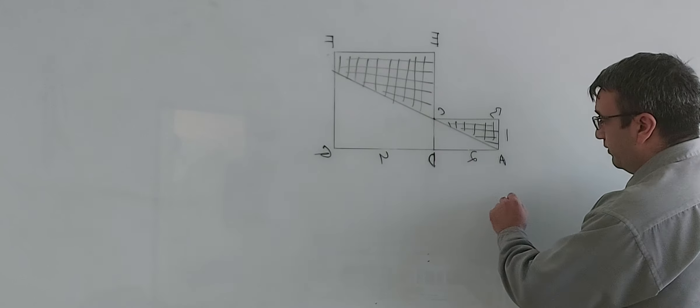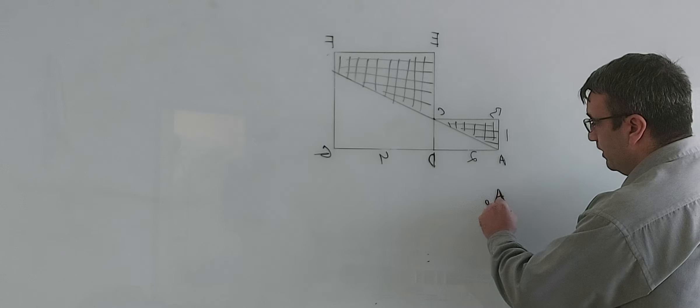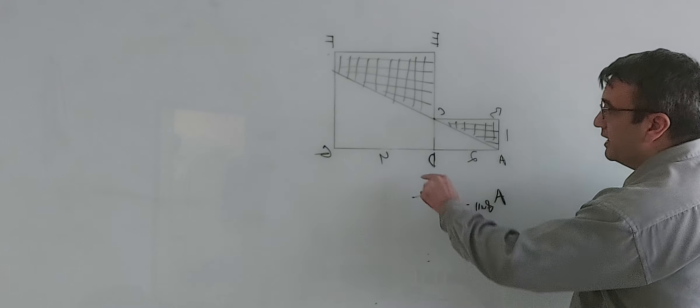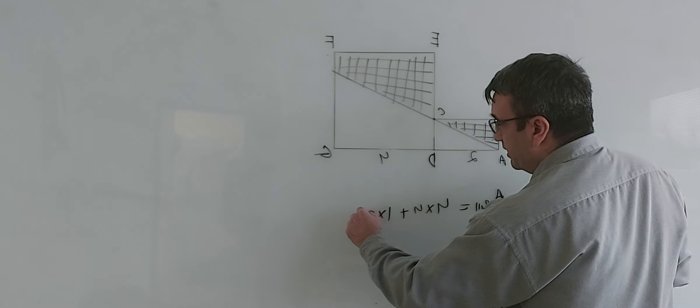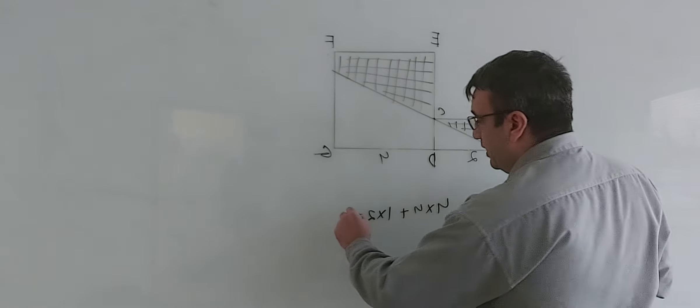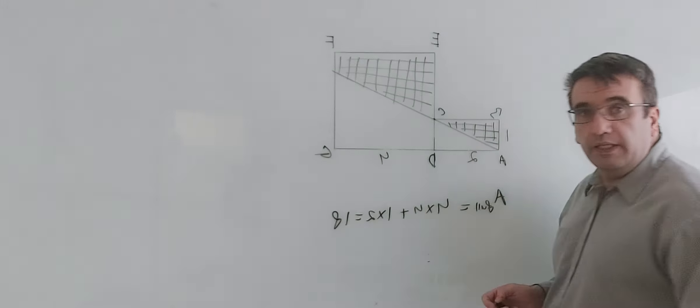So full area equals 4 times 4, area of the square, plus area of the rectangle. So it will be 16 plus 2 is 18.